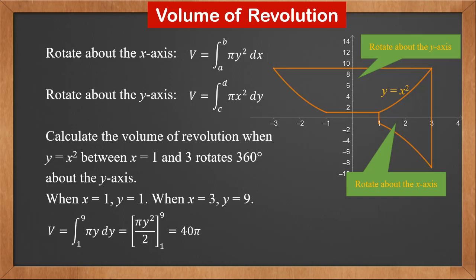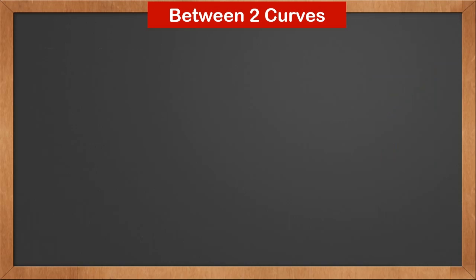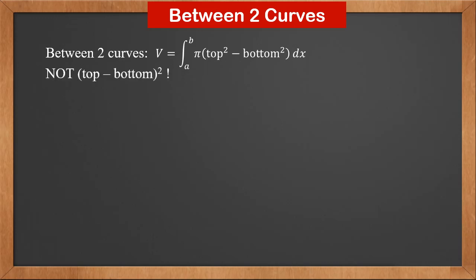Remember there's always a pi here. If we rotate the part between two curves, the volume is the integral of pi times top squared minus bottom squared. Remember, it's not top minus bottom, all squared.